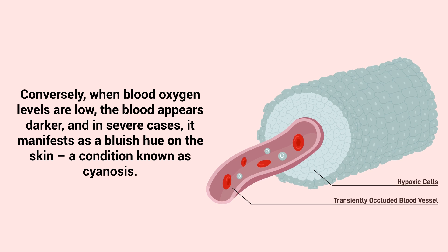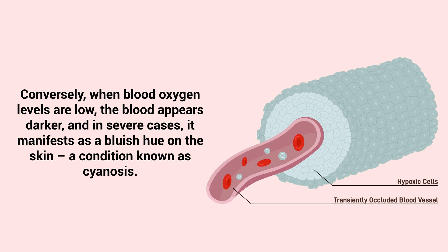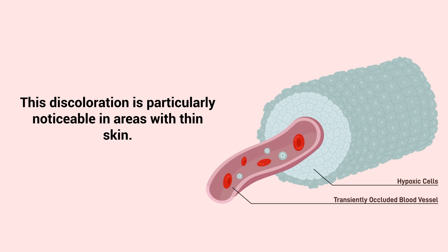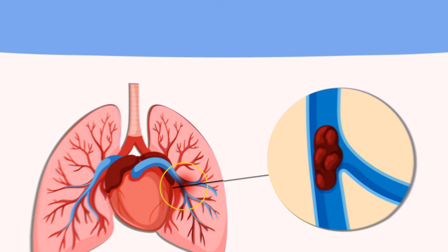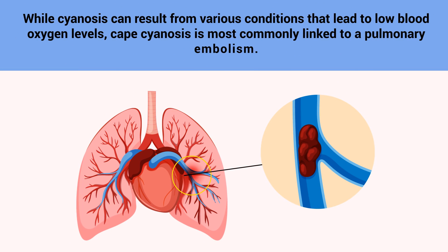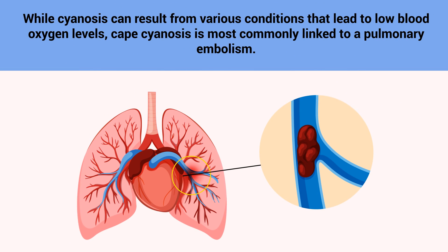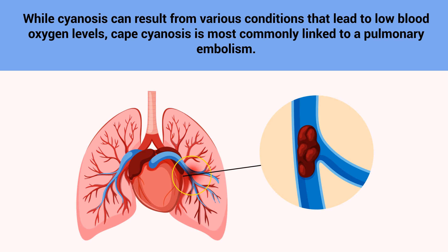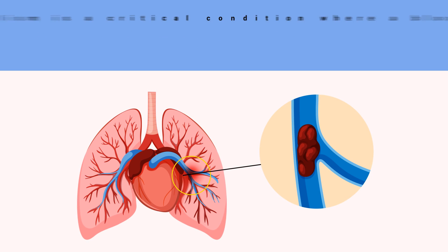In severe cases, low blood oxygen manifests as a bluish hue on the skin — a condition known as cyanosis. This discoloration is particularly noticeable in areas with thin skin. While cyanosis can result from various conditions that lead to low blood oxygen levels, cape cyanosis is most commonly linked to a pulmonary embolism.